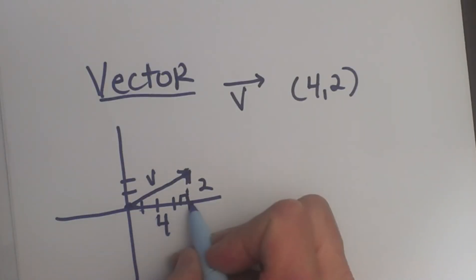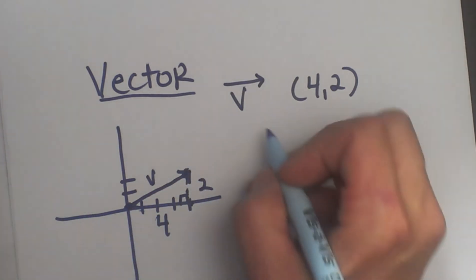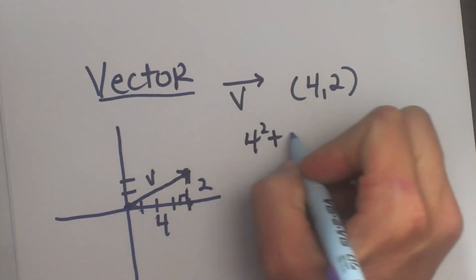See how 4 is one side and 2 is one side of a right triangle? So the vector is actually the hypotenuse. Let's find the value of that vector.